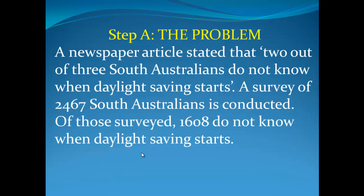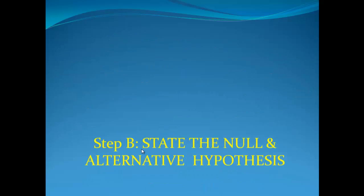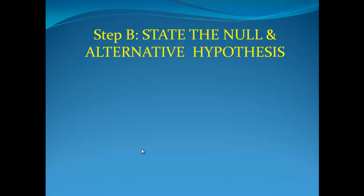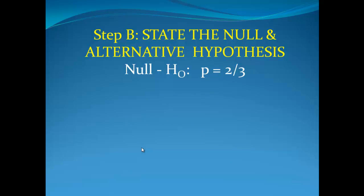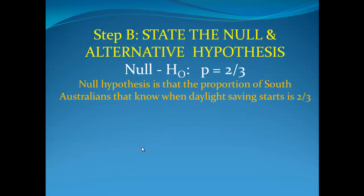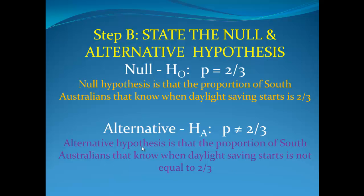A newspaper article states that 2 out of 3 South Australians do not know when daylight saving starts. A survey of 2,467 South Australians is conducted. Of those surveyed, 1,608 do not know when daylight saving starts. So we've got a proportion situation. Step B will be to state the null hypothesis and the alternative hypothesis. The null hypothesis is that two-thirds of the population don't know when daylight saving starts. Our alternative hypothesis is that it's not equal to that proportion.